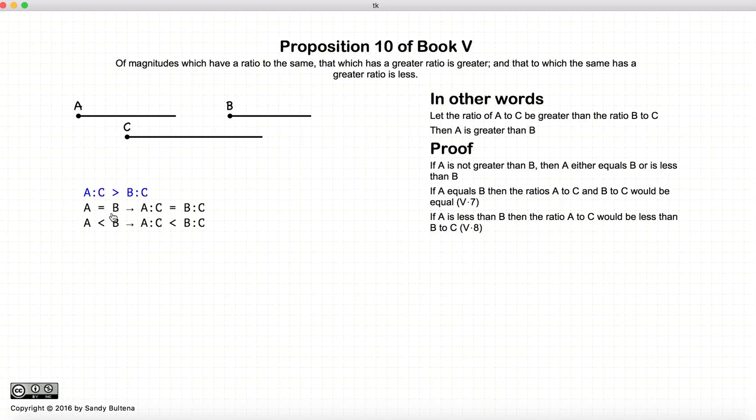If A is equal to B, then we have A to C is equal to B to C from Proposition 7. However, that is not our initial condition.